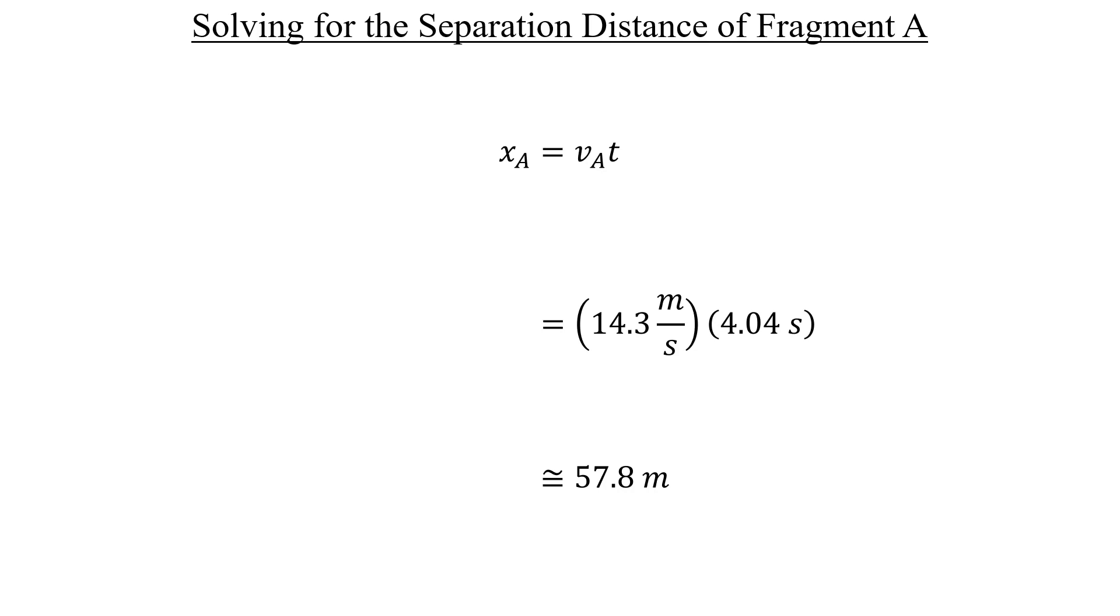Next up is B. Exact same approach here. You multiply B's velocity by the fall time, and you get a distance of about 289.3 meters for that piece.